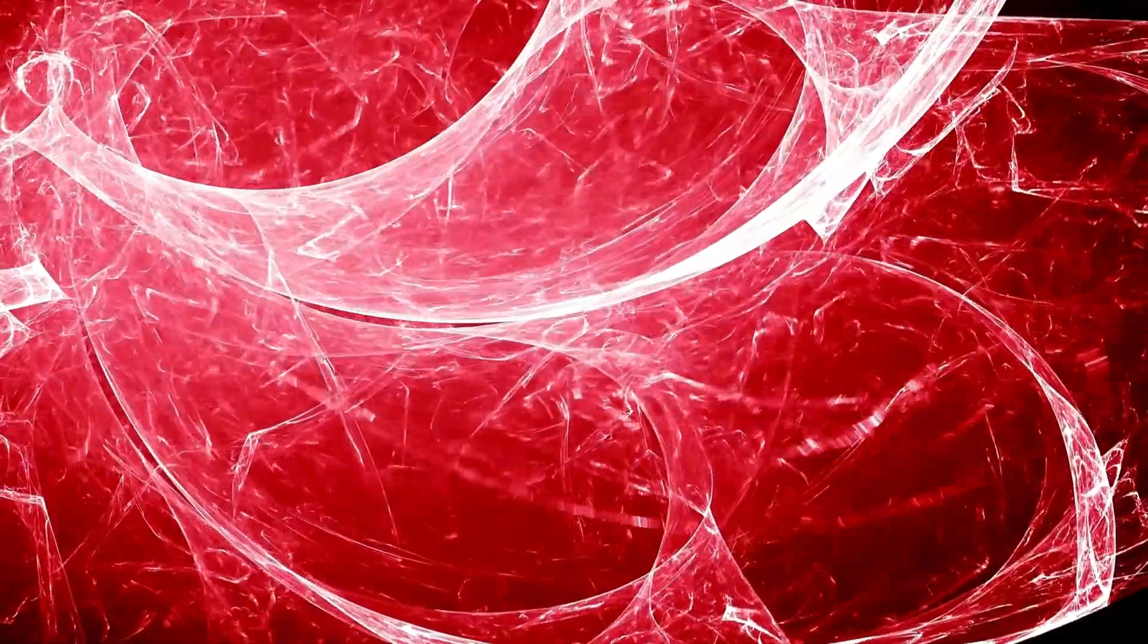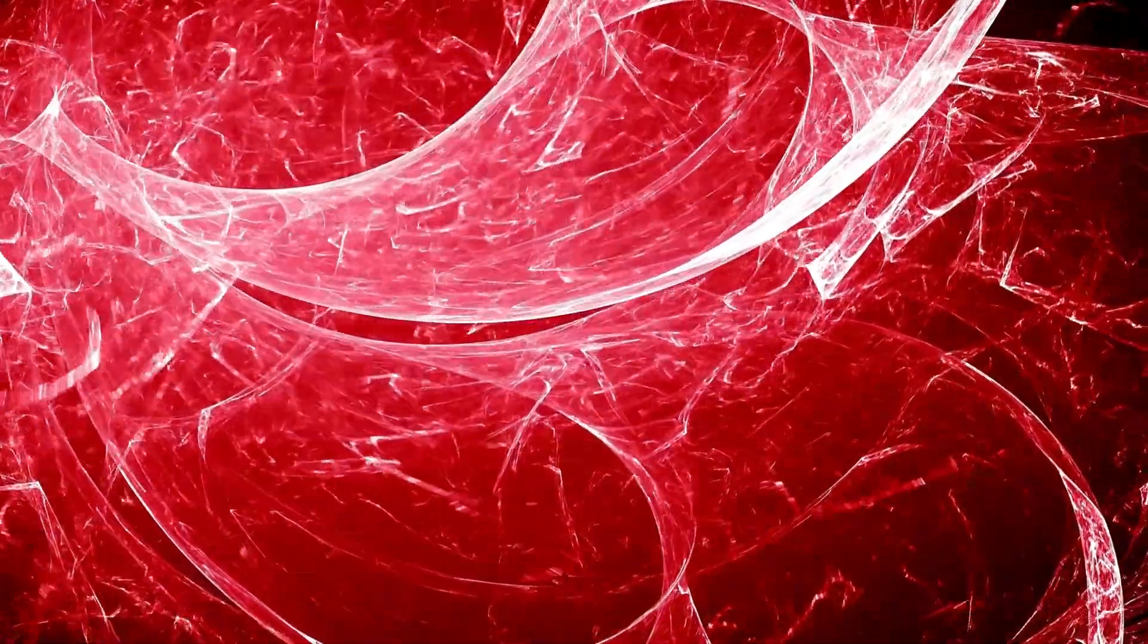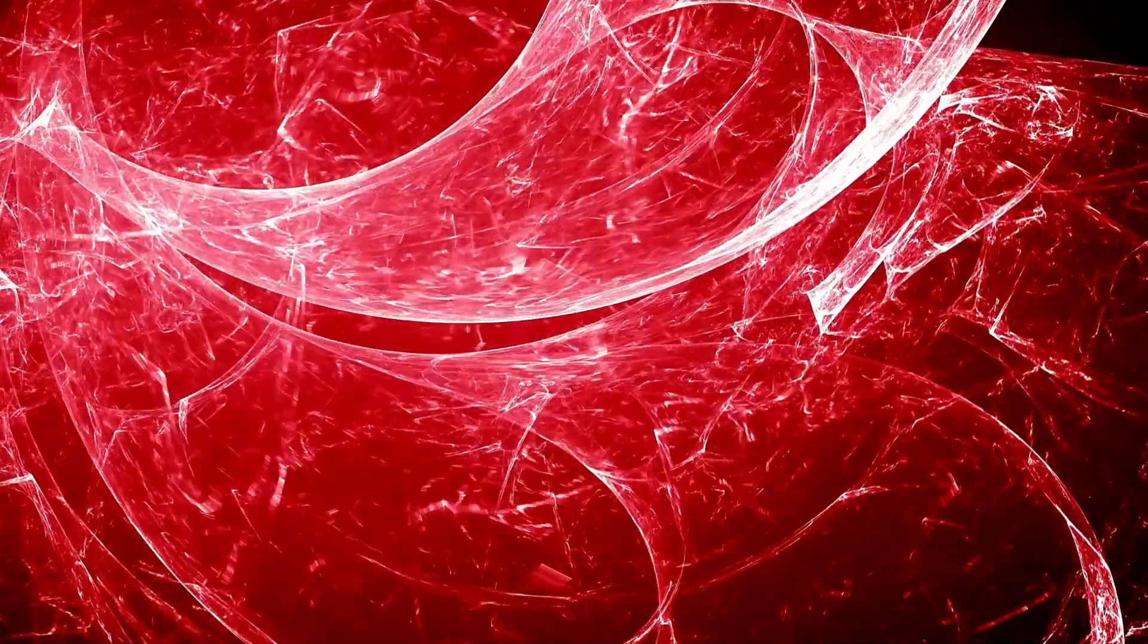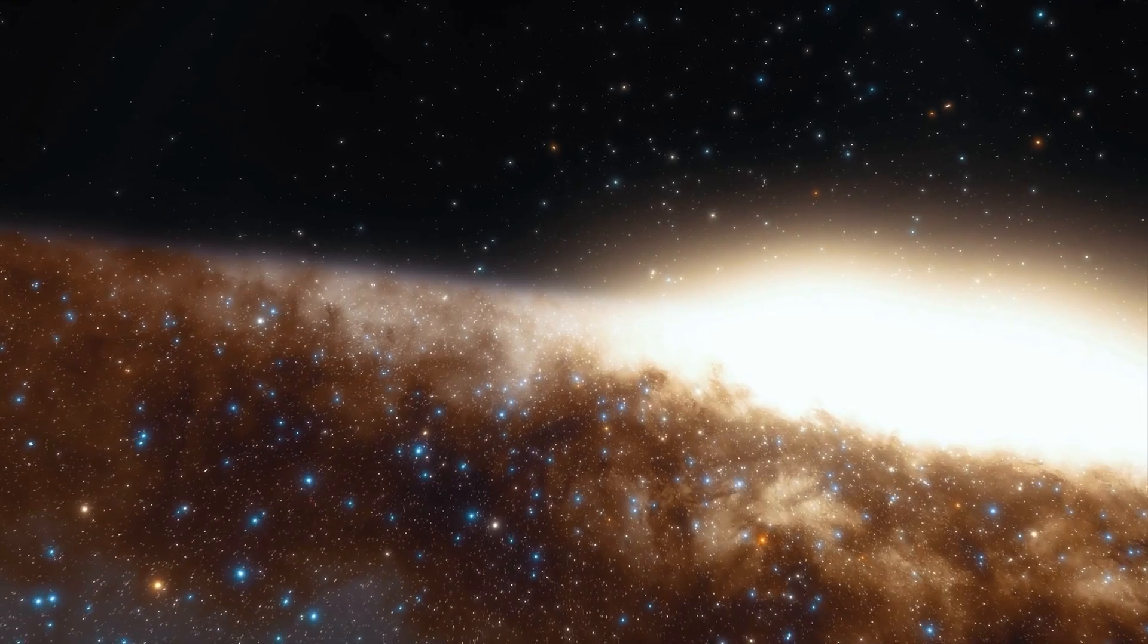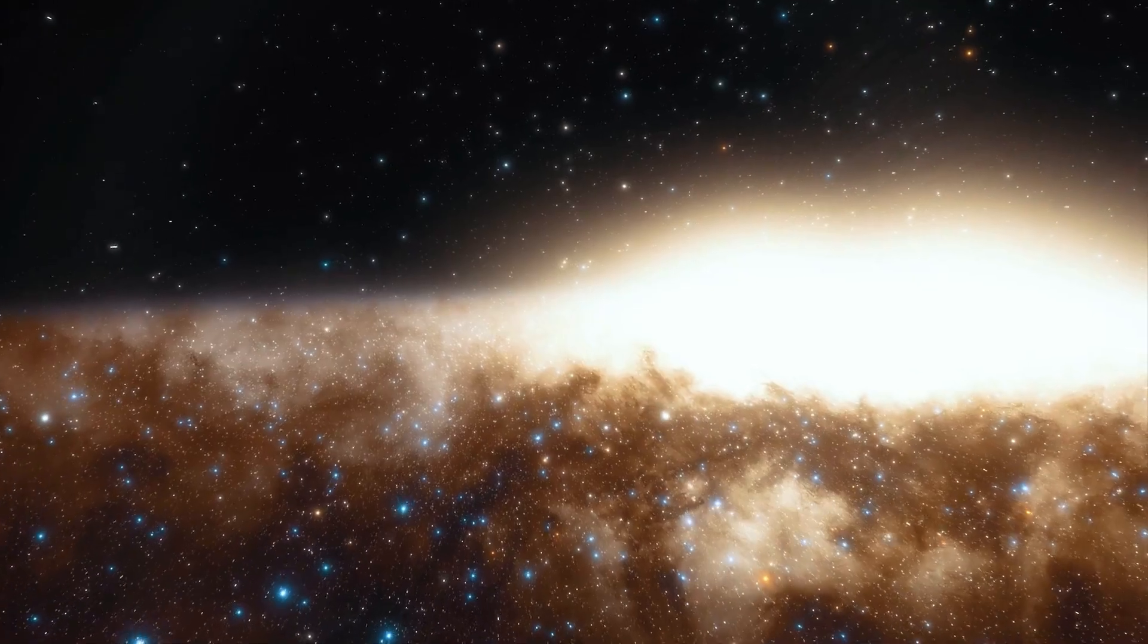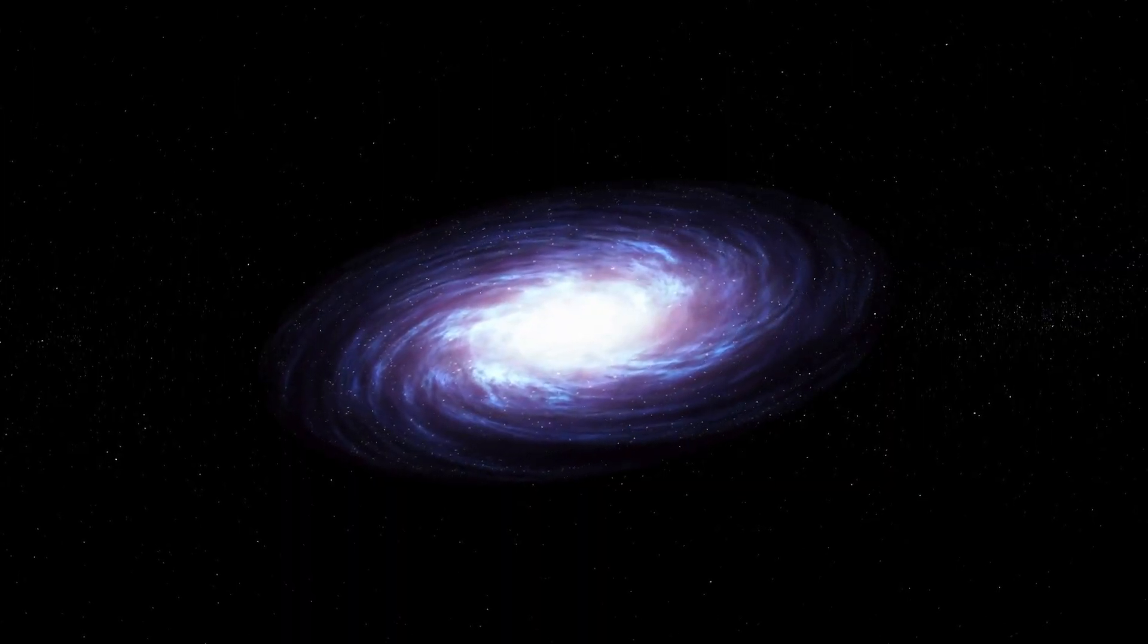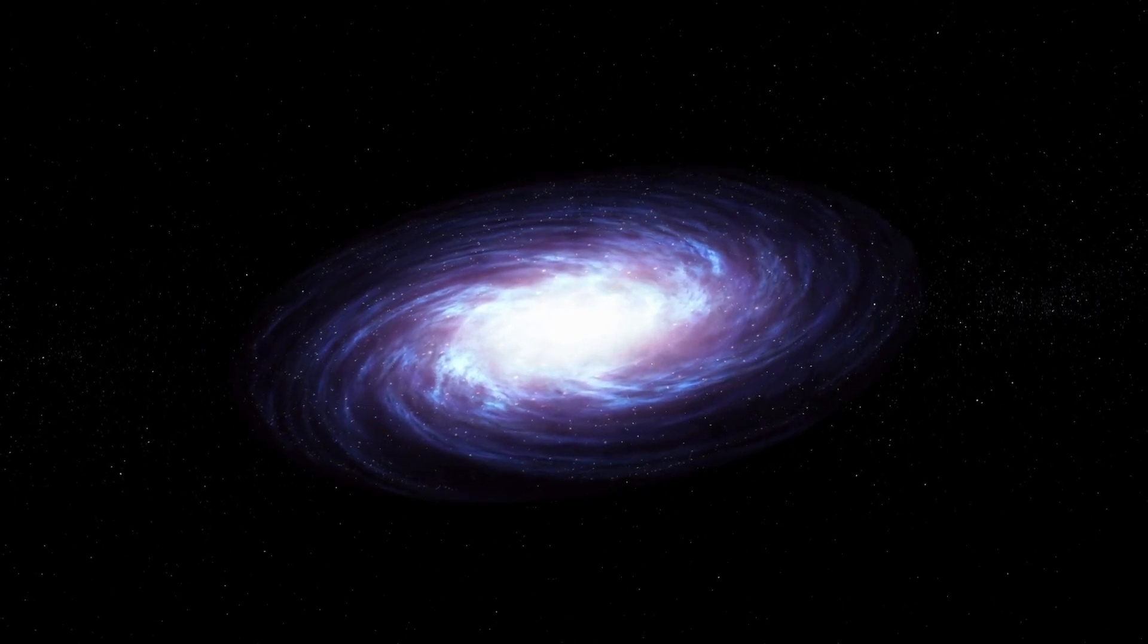So, could we use a wormhole to travel through existence? Unfortunately, the answer is probably no, not yet. Even if we could stabilize a wormhole, it's unlikely that we could use it to travel faster than light. Einstein's theory of special relativity predicts that the speed of light is a hard limit on how fast anything can travel through spacetime.